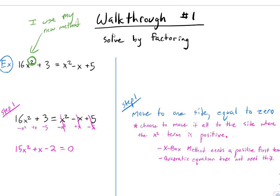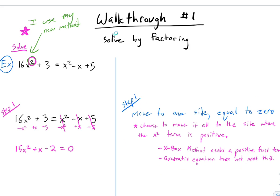Walkthrough number 1 — solve by factoring. As soon as I see the word 'solve' and an x squared, I know I'm using my other plan. Everything to one side equal to zero is step one. I do that by subtraction: subtract x squared, add x to both sides, subtract 5 from both sides. So the entire right side is gone and that becomes zero.